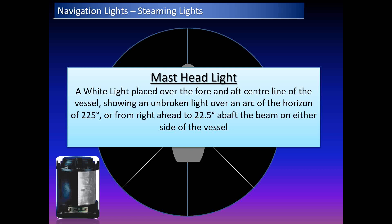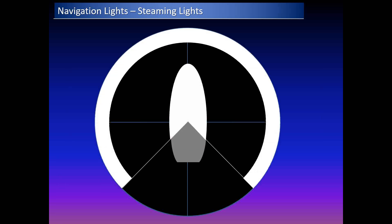This is the masthead light sector. The housing of the masthead light is designed so it is only visible through an unbroken sector of 225 degrees. From right ahead to abeam is 180 degrees, and then 22.5 degrees on either side of abeam gives 45 degrees more, totaling 225 degrees.